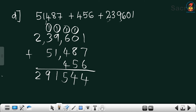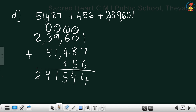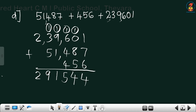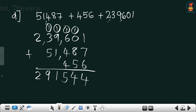Let me check one more time: 7 plus 1 is 8, plus 6 is 14 — write 4, carry 1. 8 plus 1 carry is 9, plus 5 is 14 — write 4, carry 1. 6 plus 1 carry is 7, plus 4 is 11, plus 4 is 15 — write 5, carry 1. 9 plus 1 carry is 10, plus 1 is 11 — write 1, carry 1. 3 plus 1 carry is 4, plus 5 is 9. The answer is 2,91,544. Is it clear? The addition is complete.